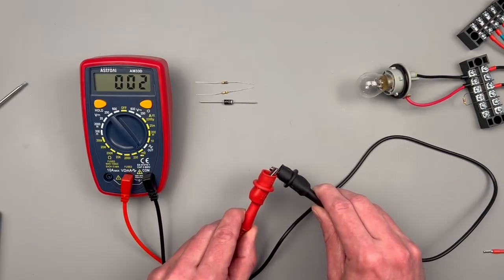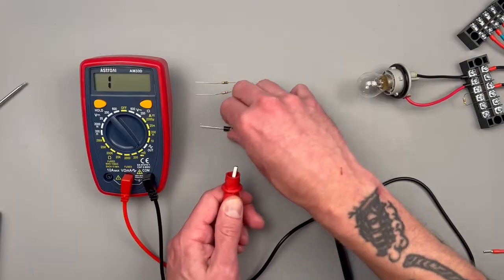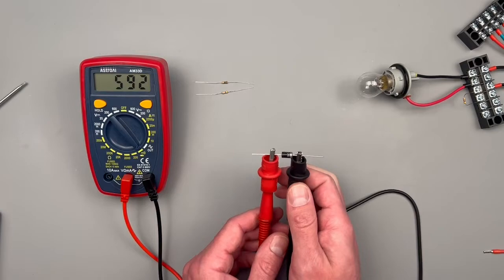Continuity is going to give us a tone telling us that there's some type of continuity there. Let's see, this diode function, if it works like other meters, it should be showing us a voltage drop across our diode. And it is, great.